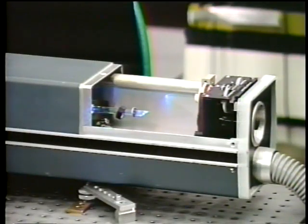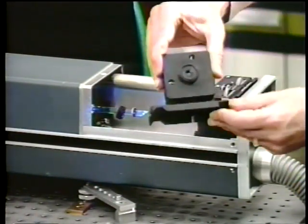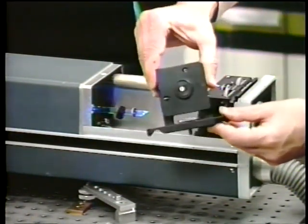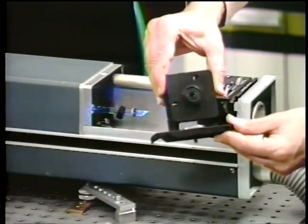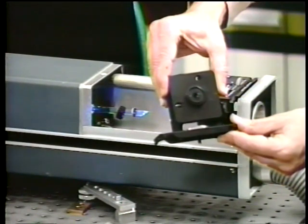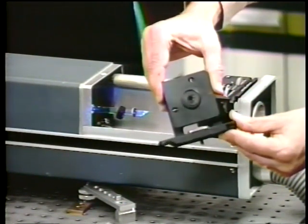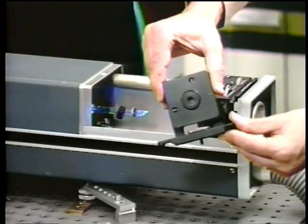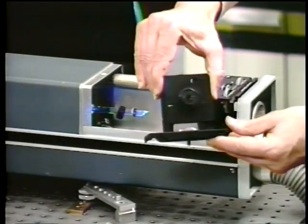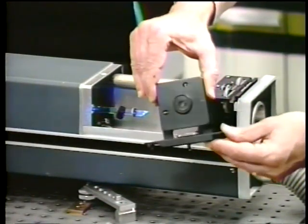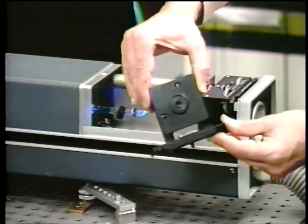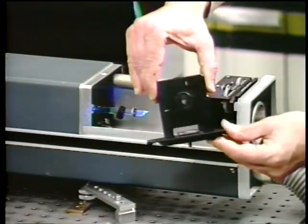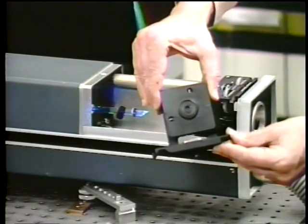Now I'm going to put an etalon inside the laser cavity. Here is the etalon in a holder. It's a very simple thing, a piece of glass, parallel piece of glass, one centimeter thick, and has a reflectivity of about 35% on each surface. And it's held in this mount here, so I can then adjust it within the laser cavity.